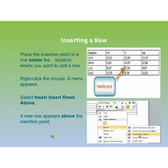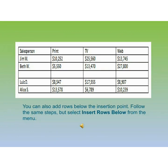Inserting a row in a table: Place the insertion point in a row below the location where you want to add a row. Right-click the mouse — a menu appears. Select Insert Rows Above, and a new row appears above the insertion point. You can see a blank row appearing in the middle of the table. You can also add rows below the insertion point by following the same steps and selecting Insert Rows Below from the menu.